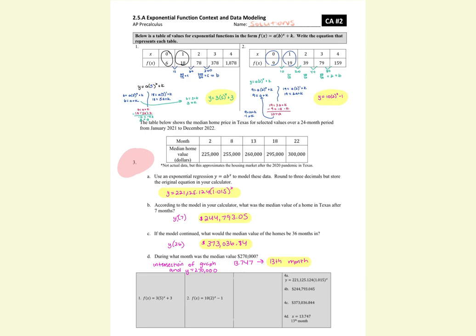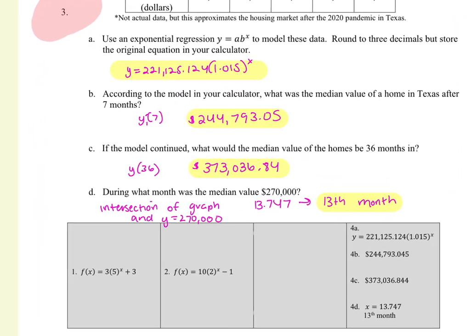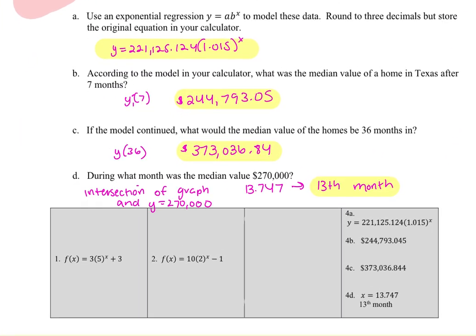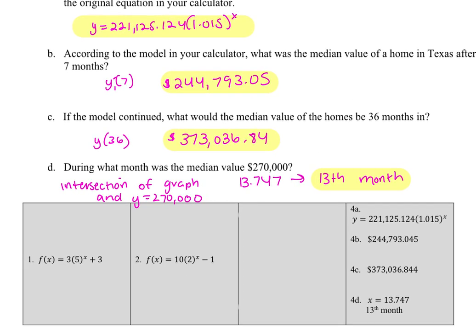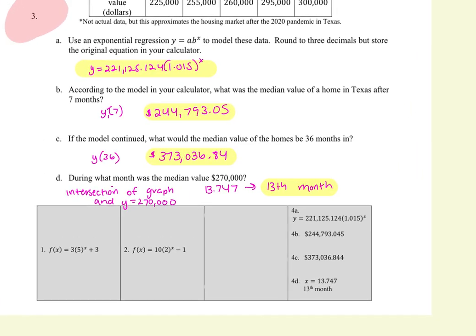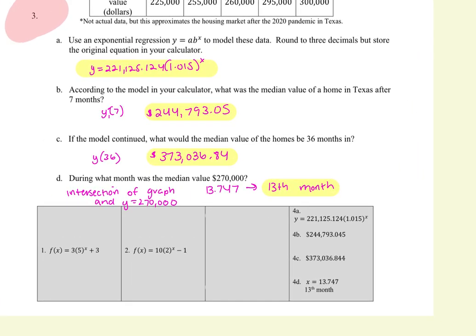For D, isn't it where you plot the line as like Y equals? Yeah. And you find where they intersect? Yeah. Because I got 14. Did you round up? Yeah. Yeah. So if you're rounding, you have to see where does it happen. And if it's happening 13.7, that's happening in your 13th year. Does that make sense?